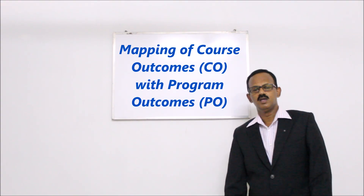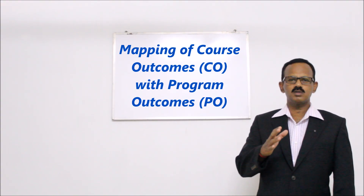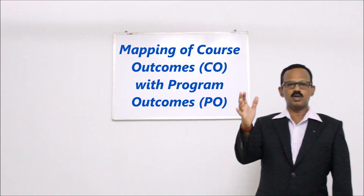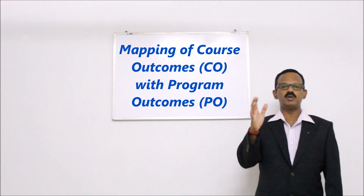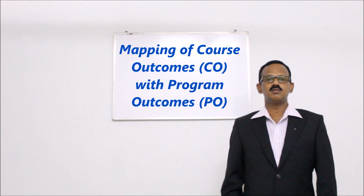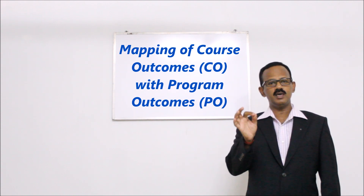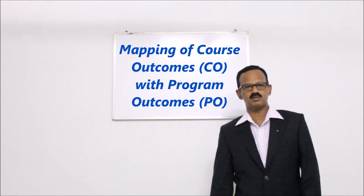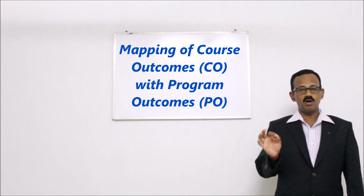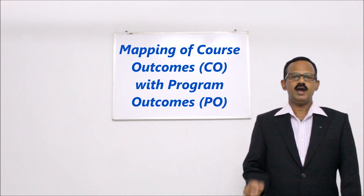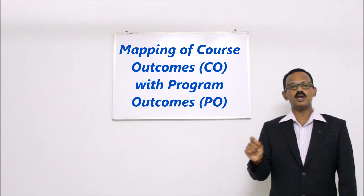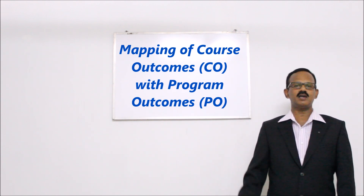I am very happy to discuss about mapping course outcomes with program outcomes — that is, mapping COs with POs. In my previous videos I have already mentioned that for each and every course there should be a minimum of six course outcomes. It has been mandated in accreditation documents that for a course there should be six course outcomes, and for any undergraduate engineering program there are twelve program outcomes given by accreditation agencies.